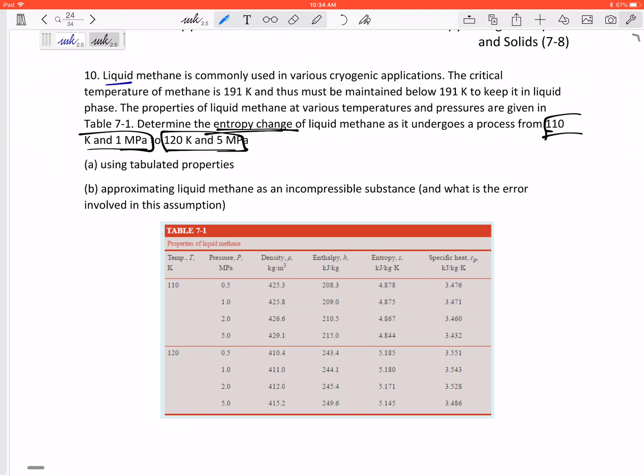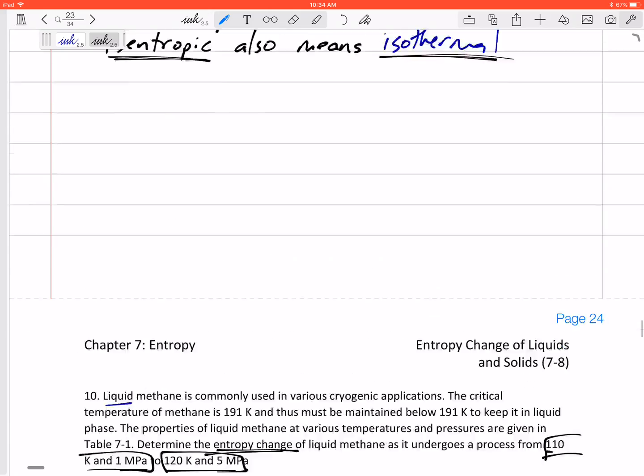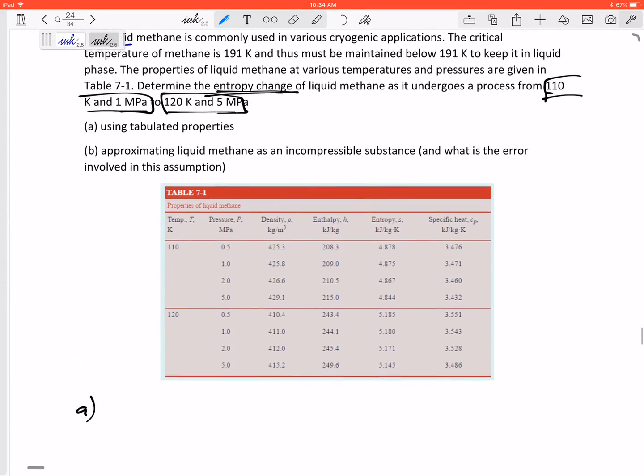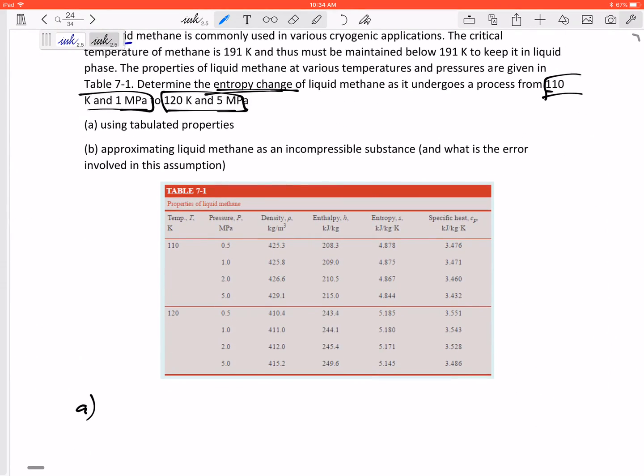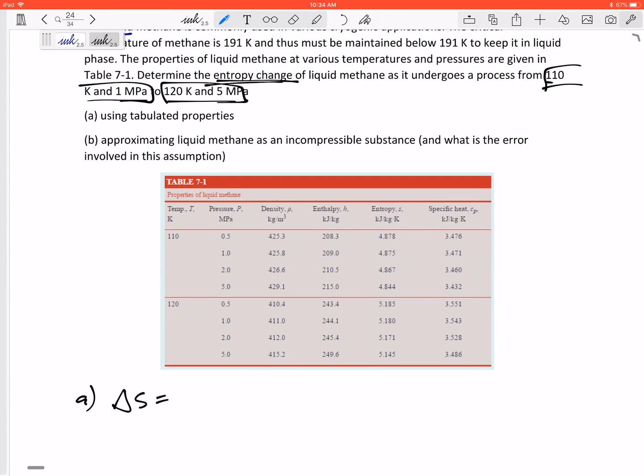Using tabulated properties and then approximating liquid methane as incompressible and using the equation that we just derived that I put with four stars for liquid methane. Alright, so tabulated properties, that's best, most accurate and sometimes easiest.